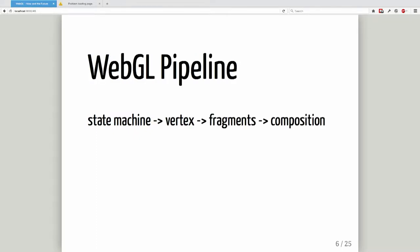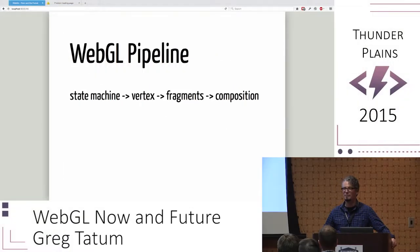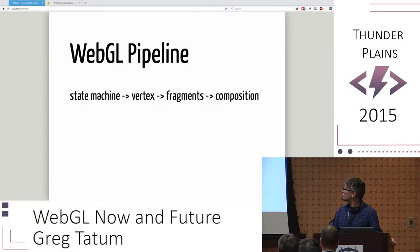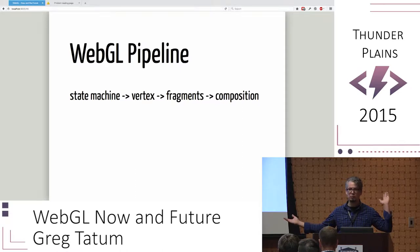This talk isn't long enough to do really deep low-level stuff, so I want to give you some general conceptual guidelines on what WebGL is and what it does. Here are the basic steps: you have a state machine that you can configure, with all your GL calls. Then you take vertices — points — and you move them. Then you create fragments of color, and you put them together into a picture. That's what WebGL does.